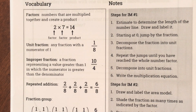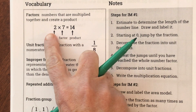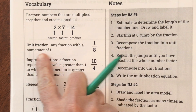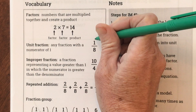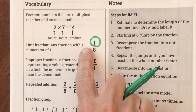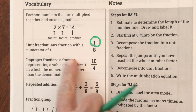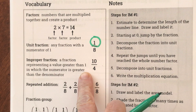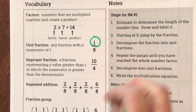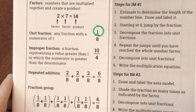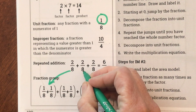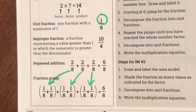Our first word is factors. In a multiplication problem, the factors are the numbers that are multiplied together to get your answer, which is called our product. They also remind us about a unit fraction — it's any fraction with a numerator of one. We're not only going to be using unit fractions though. They also remind us what an improper fraction is: a fraction representing a value greater than one, in which the numerator is greater than the denominator. And they show us repeated addition — two-eighths is the same as one-eighth plus one-eighth.